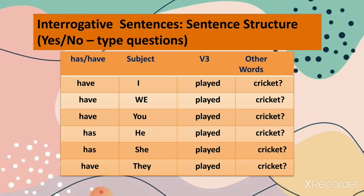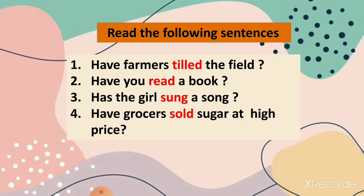The next type of sentence is interrogative sentence — yes or no type questions. The sentence structure is: has/have plus subject plus verb third form plus other words. We use has/have at the beginning of the sentence followed by the subject. Examples: Have I played cricket? Have we played cricket? Have you played cricket? Has he played cricket? Has she played cricket? Have they played cricket? Applying this to our examples: Have farmers tiled the field? Have you read a book? Has the girl sung a song? Have grocers sold sugar at high price? Remember to add a question mark.